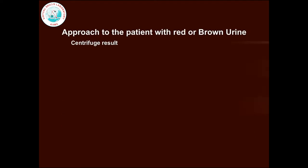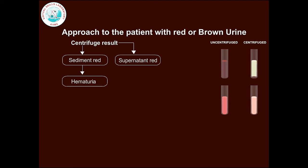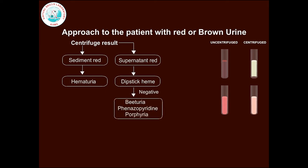The initial step is centrifuging the urine sample to see if the red colour is in the sediment or the supernatant. If the sediment is red and supernatant clear, it indicates hematuria. If the supernatant is red, perform a dipstick test for heme. If the test is negative, rule out bilirubinuria, phenazopyridine ingestion, or porphyria. If the test is positive, there can be presence of myoglobin or hemoglobin.